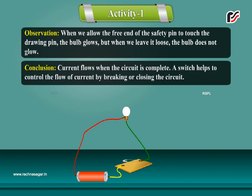Conclusion: Current flows when the circuit is complete. A switch helps to control the flow of current by breaking or closing the circuit.